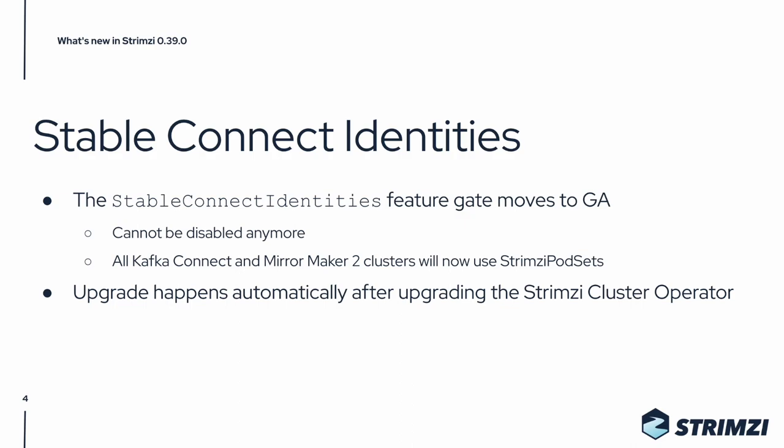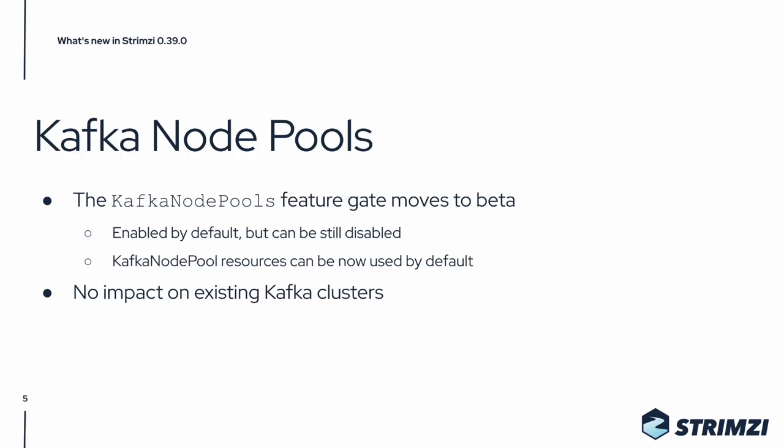Another feature gate promoted in this release is the Kafka NodePools feature gate. It moves to the beta stage, meaning it will be enabled by default but you can still disable it if you want to. You can now use Kafka NodePools resources by default without any feature gate changes, and if you are not using Kafka NodePools, there is no impact on your existing Kafka clusters.